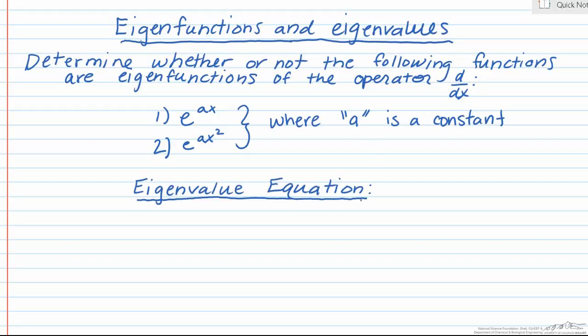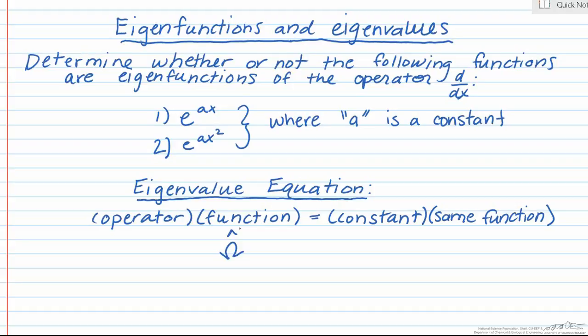As a reminder, an eigenvalue equation takes on the general form: an operator acting on a function is going to be equal to a constant factor times that same initial function. Often you'll see the operator denoted as an uppercase omega, and the constant factor as a lowercase omega.